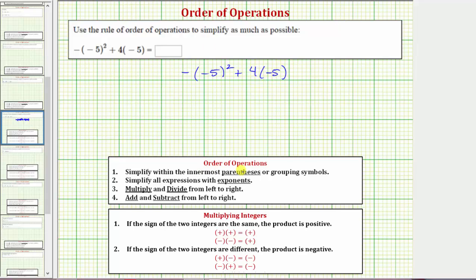The first step in the order of operations is to simplify inside the parentheses or grouping symbols, but notice how in this expression we cannot simplify inside the parentheses, so we go to step two where we simplify all expressions with exponents.